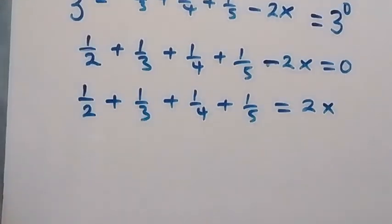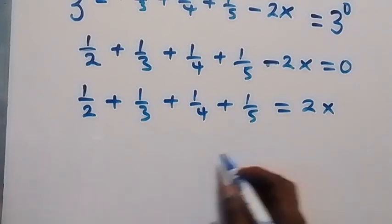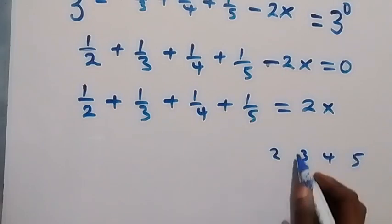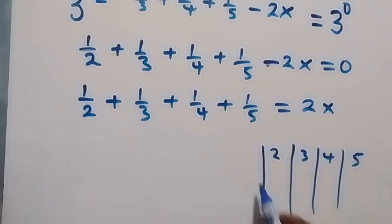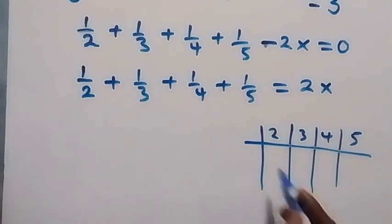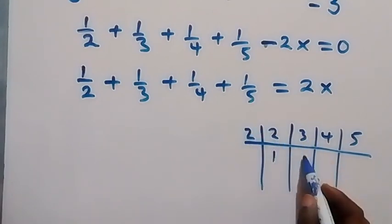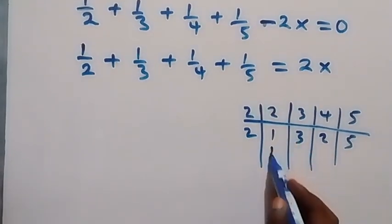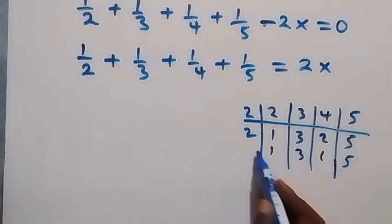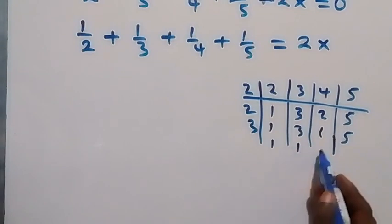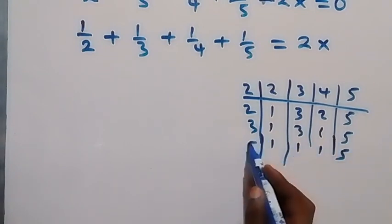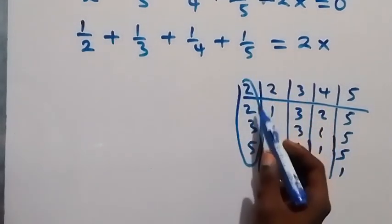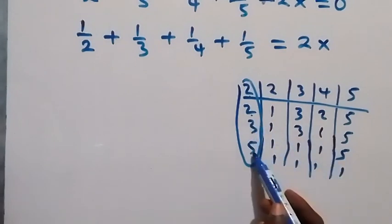Let's bring these fractions together by finding the LCM of 2, 3, 4, and 5. We divide by the first prime number that goes into any of them — starting with 2, then 2 again, then 3, then 5 — giving us LCM = 2 × 2 × 3 × 5 = 60.